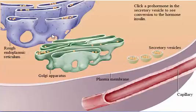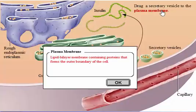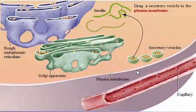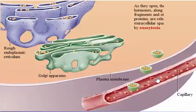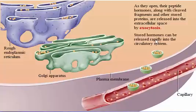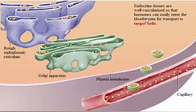In response to stimulation, secretory vesicles move to the plasma membrane and fuse with it. As they open, their peptide hormones, along with cleaved fragments and other stored proteins, are released into the extracellular space by exocytosis. Stored hormones can be released rapidly into the circulatory system. Endocrine tissues are well vascularized so that hormones can easily enter the bloodstream for transport to target cells.